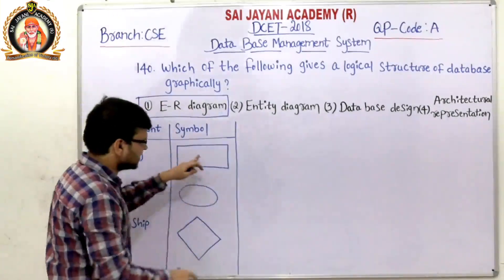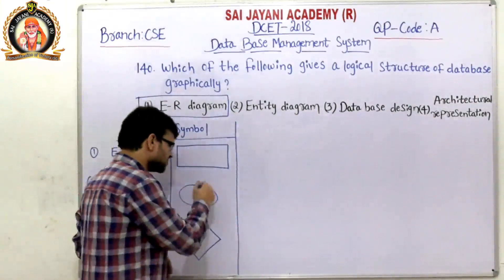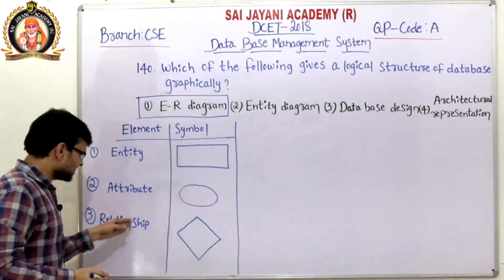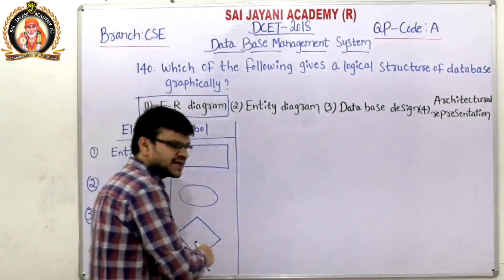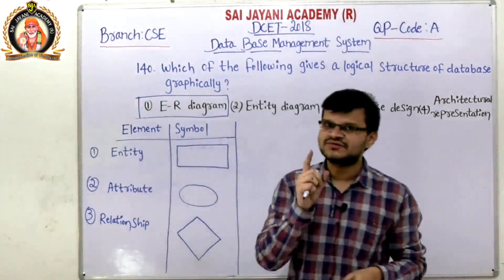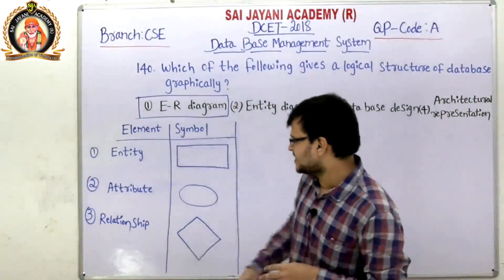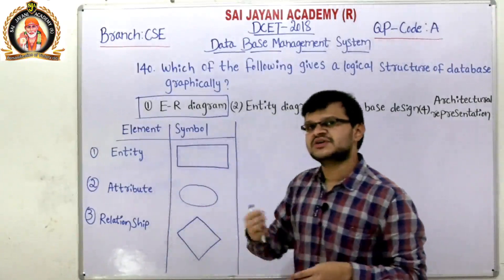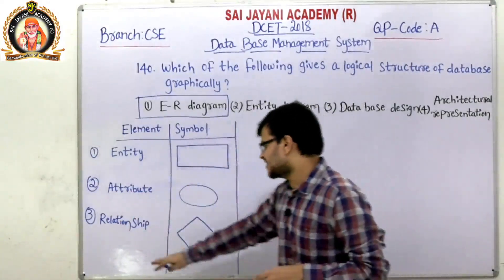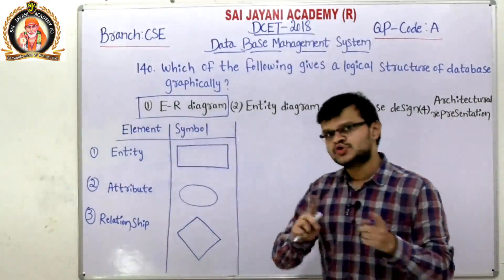The entity is represented by a rectangle symbol, the attribute is represented by an oval or ellipse shape, and a relationship is represented by a diamond symbol. An entity is a real-world object — it can be any place, person, or object. Entities are represented by their properties, called attributes. A relationship is the association that exists between two or more entities.